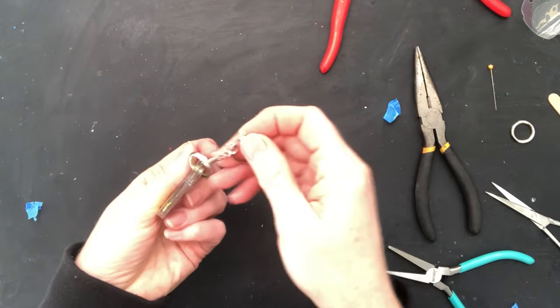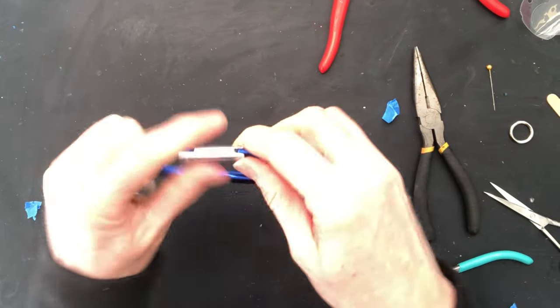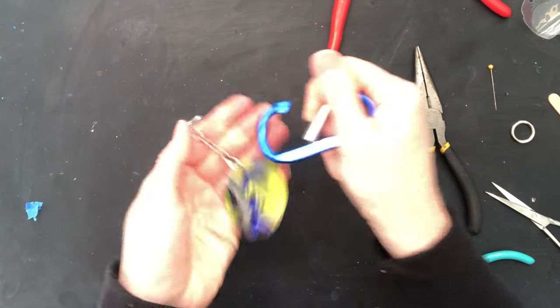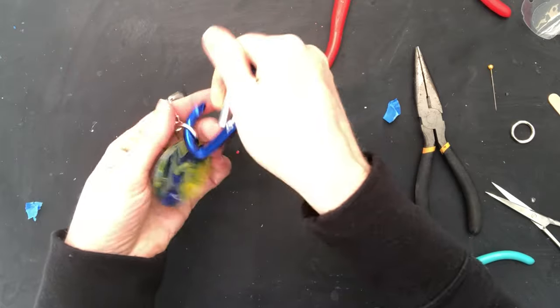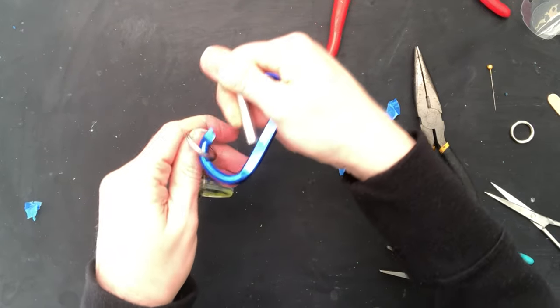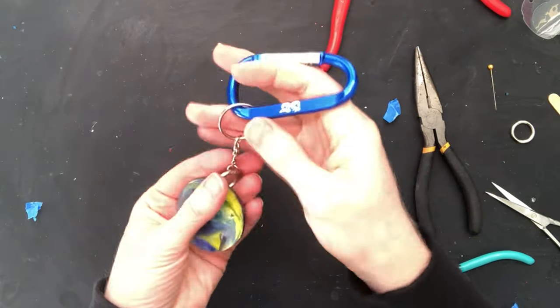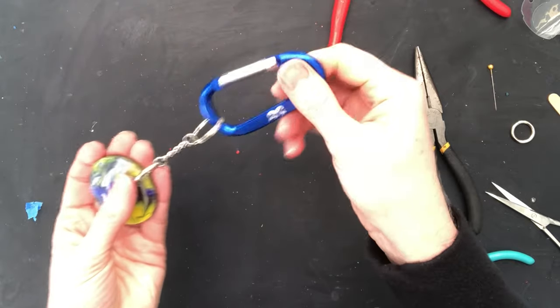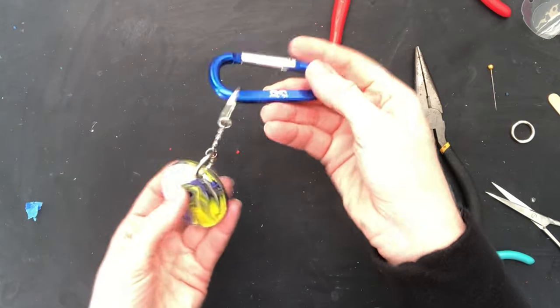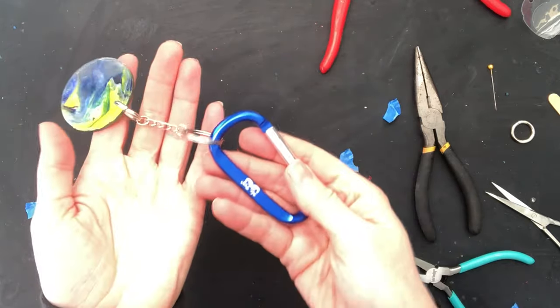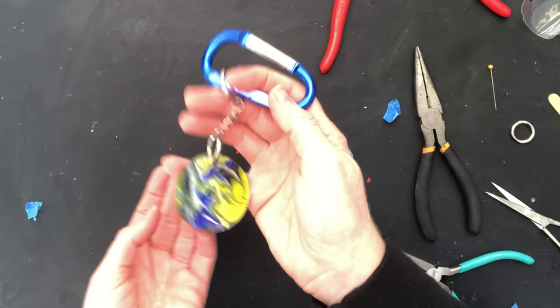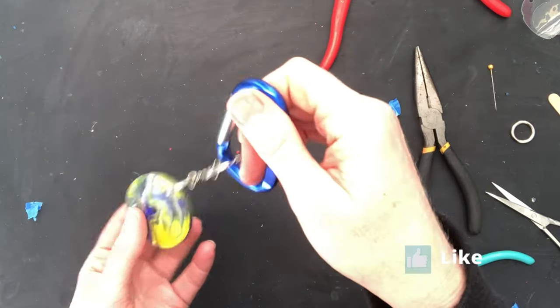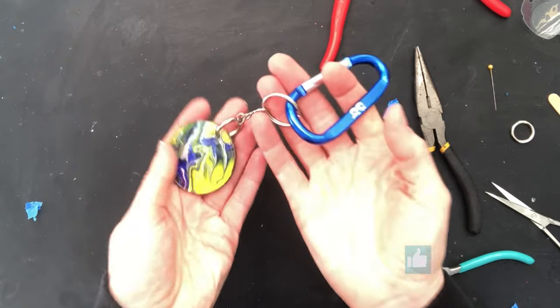You can also make these into luggage tags. You can put initials on these if you want to. You can just get a carabiner like this. You don't have to use the keyring. You can put it straight through here as a luggage tag. This is a great way to be able to tell your bag from someone else's by putting this on there. And then you have a tag to see when it comes down that conveyor belt if you're traveling. So that's a fun little thing that you can do and it's just that easy.